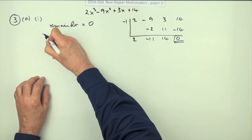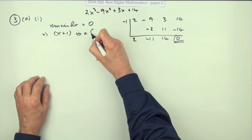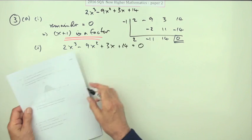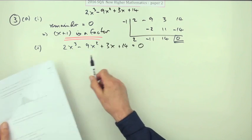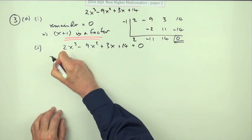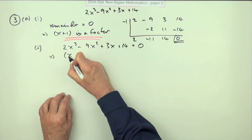Then your statement: the remainder equals 0. That means that x plus 1 is a factor. And so part 2, hence solve this equation involving exactly the same expression. The way you solve that equation is by factorizing, and you've already started: x plus 1 is a factor.